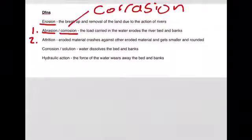Process number two is attrition. This occurs when eroded material crashes against other eroded material and gets smaller and rounded. So this occurs basically when small stones and pebbles are carried in the river in the current. These bash off other small stones and pebbles and both of them get worn down and made smaller and more rounded.